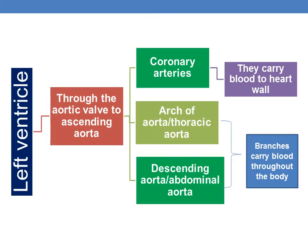The overall picture is: the left ventricle pumps blood through the aortic valve to the ascending aorta. This ascending aorta is divided into branches — the coronary arteries, the arch of aorta or thoracic aorta, and the descending aorta or abdominal aorta. The branches of the arch of aorta and the descending aorta carry blood throughout the body.